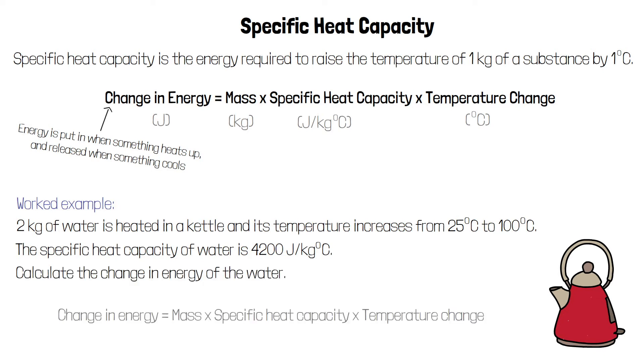Change in energy is equal to mass times specific heat capacity times temperature change. The temperature change from 25 degrees to 100 degrees is 75 degrees.